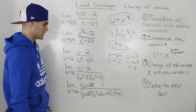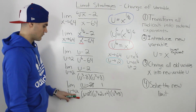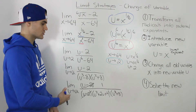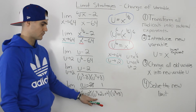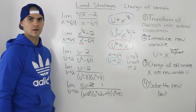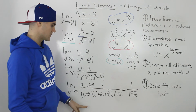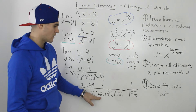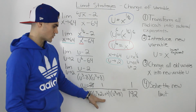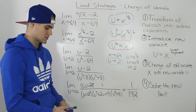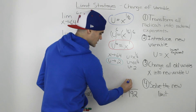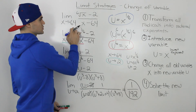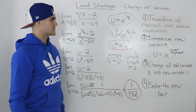Now we can make a direct substitution with u equals 2, since we won't get a zero in the denominator anymore. Substituting 2 for u: the first bracket gives 12, the second bracket gives 16, and 12 times 16 is 192. So our final answer is 1 over 192.